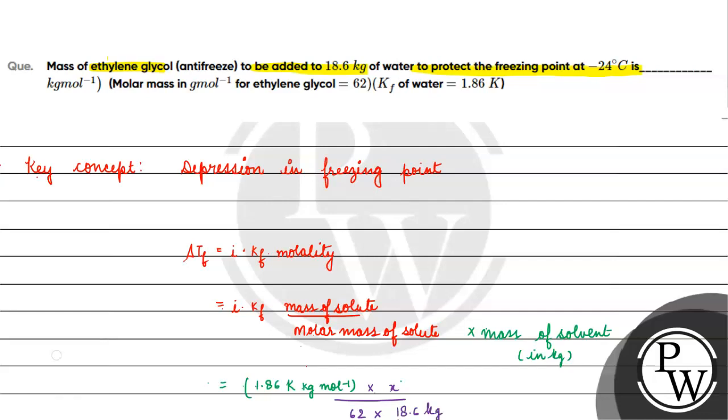62 gram per mole - the gram and mole cancel, and kg cancels with kg. Now for delta Tf: